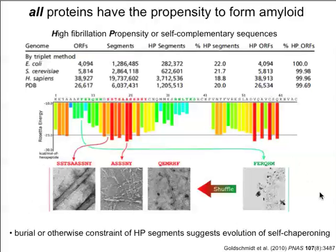So why don't all proteins form amyloids? Well, lots do and lots lead to disease, but obviously all proteins don't form amyloids or we wouldn't be here. The upshot of this research is that these high-propensity sequences are often buried or involved in other strong and tight interactions that prevent self-aggregation. The idea is that we can't avoid these HP sequences — they're very common throughout nature. Instead, what we evolve is a mechanism of self-chaperoning those structures to prevent aggregation.